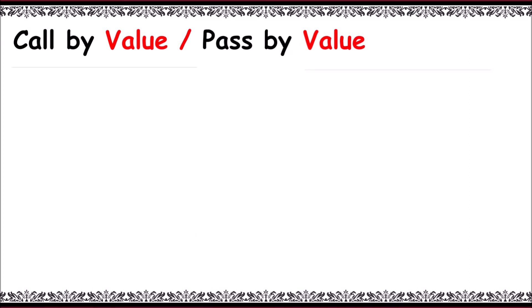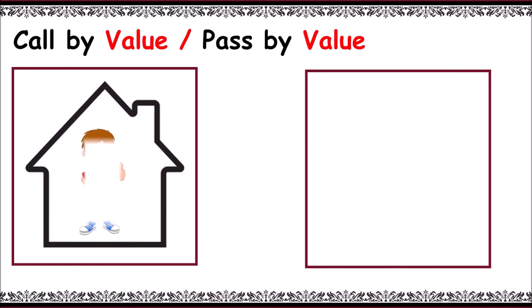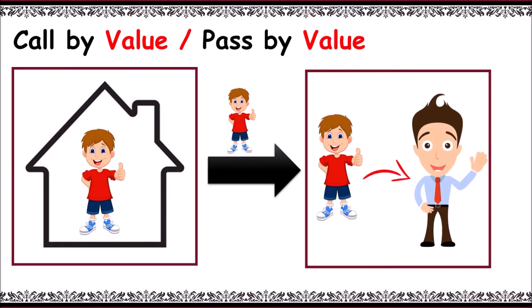There are two functions here, and we need to pass data between them. The first function contains a house and a boy in it. I want to send a copy of the boy to another function. In that other function, I want to modify the boy into a man.